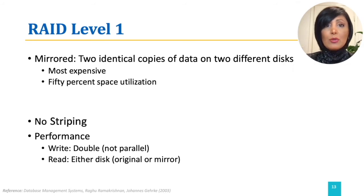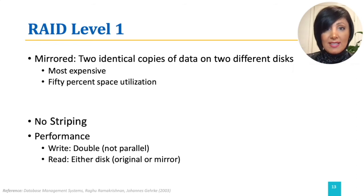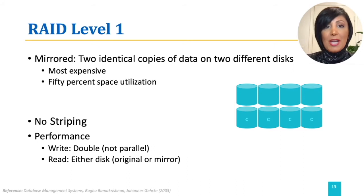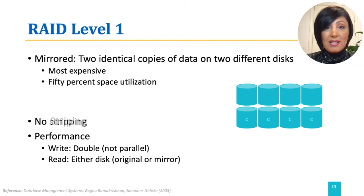Reads could be scheduled to optimize performance, choosing to happen from either copy. In our example, having four disks and data that would fit in four disks, RAID level one implementation will have four check disks with mirrored data, shown with C for check in the figure. Effective space utilization in RAID level one is always 50% because of mirroring.